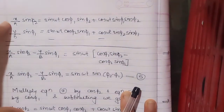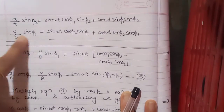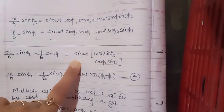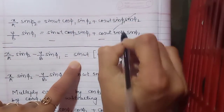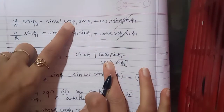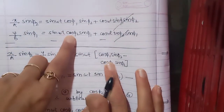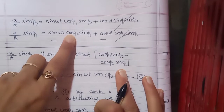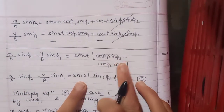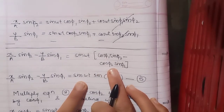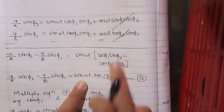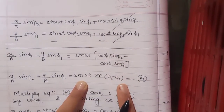Now subtracting these two: x/a · sin φ₂ − y/b · sin φ₁ equals the result. The cos ωt terms cancel. Taking sin ωt common, inside the bracket I get cos φ₁ sin φ₂ − cos φ₂ sin φ₁, which is the expansion of sin(φ₂ − φ₁). So I get equation 5: x/a · sin φ₂ − y/b · sin φ₁ = sin ωt · sin(φ₂ − φ₁).